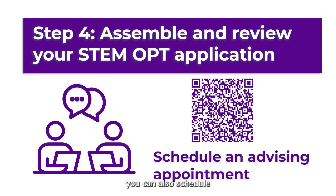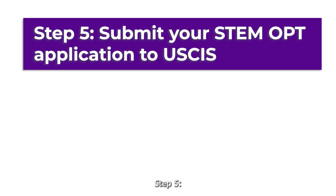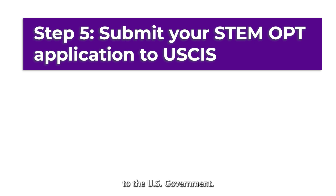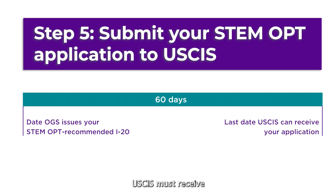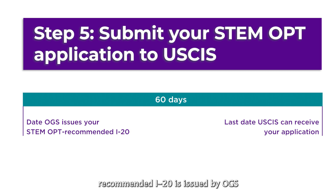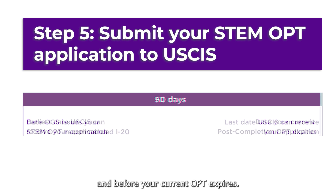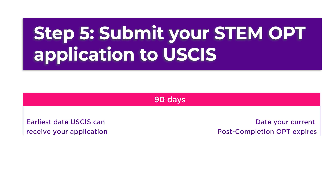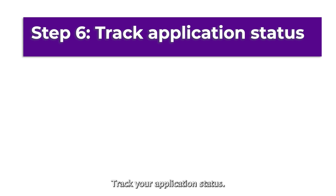Incomplete or incorrect applications can cause serious delays or denials. If you have questions about your application, you can also schedule an advising appointment. Step 5: Submit your STEM OPT application to the US government. USCIS must receive the application within 60 days from when your STEM OPT recommended I-20 is issued by OGS and before your current OPT expires.